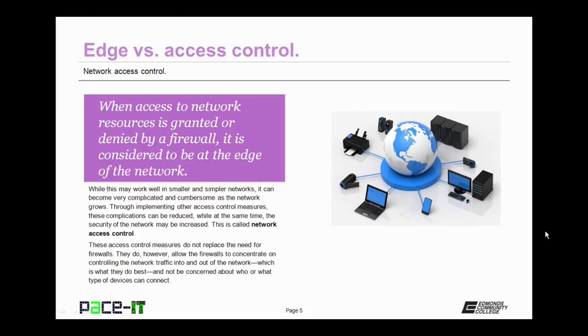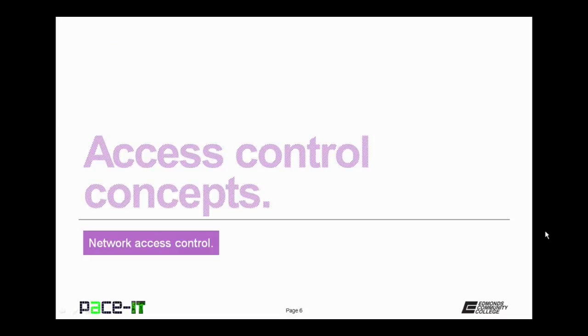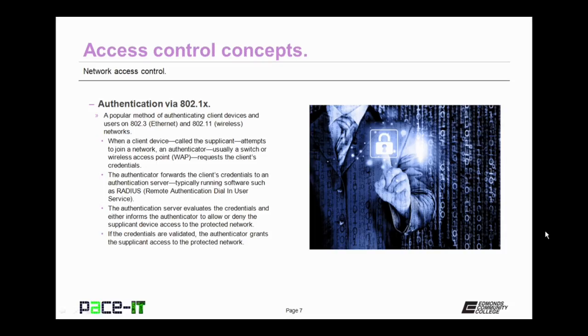Firewalls are not very efficient at that aspect of edge access control. Let's move on to some access control concepts. First up is authentication via 802.1x. 802.1x is a popular method of authenticating client devices and users on either Ethernet or wireless networks. When a client device, which is called the supplicant, attempts to join a network, an authenticator, which is usually a switch or wireless access point, requests the supplicant's credentials.